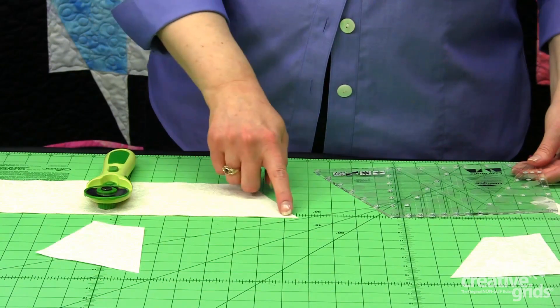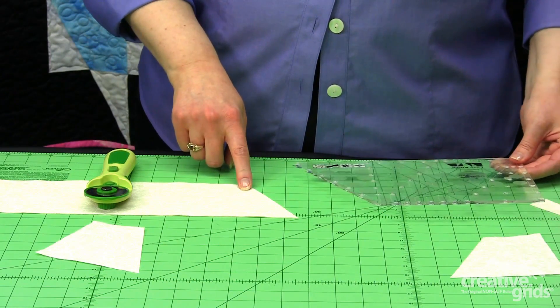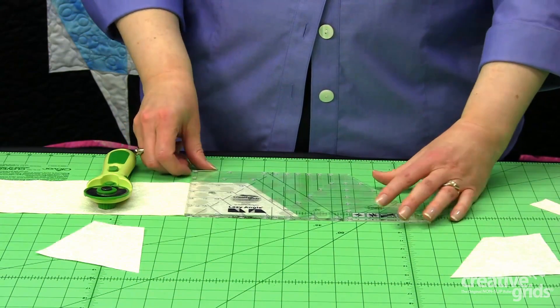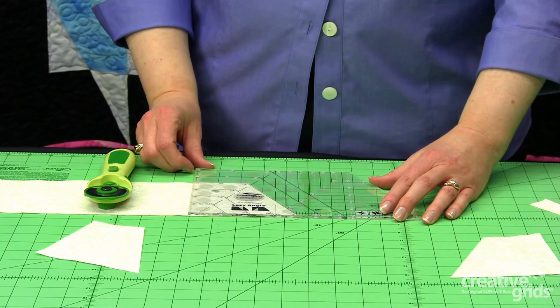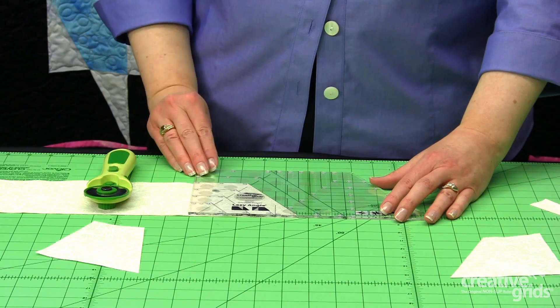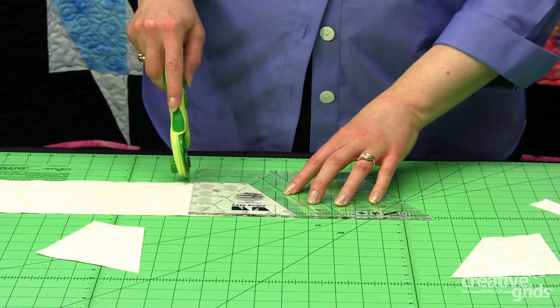Now we're going to follow the edge of the strip again and find the image on the tool, simply by rotating, that matches what the edge of our fabric is doing. And we're going to follow the marks at 4 1/2 on the square side of the tool to cut again for another A piece.